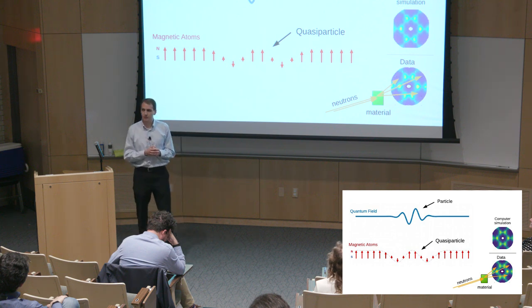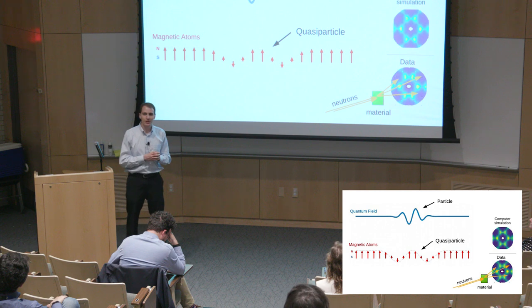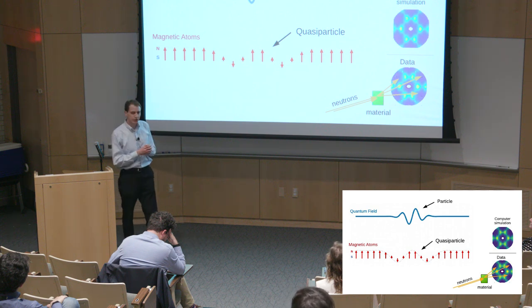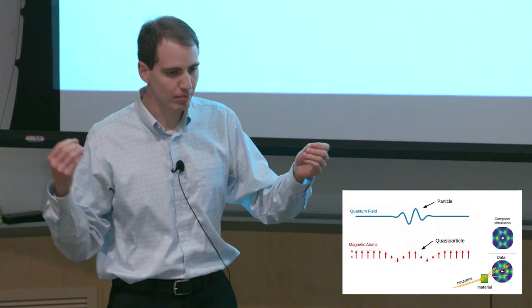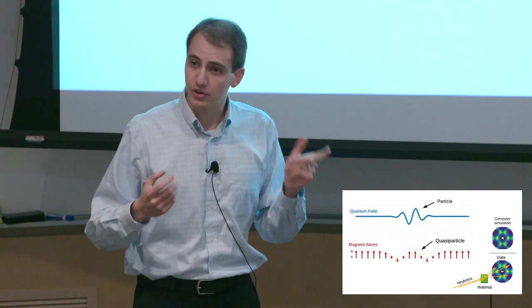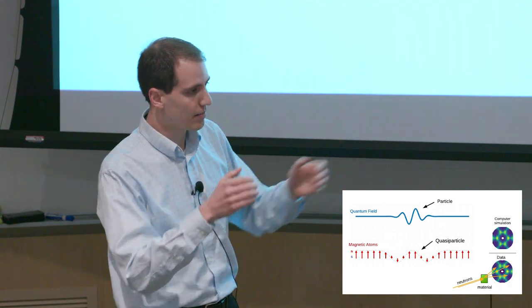In my thesis research, I've used a technique called neutron scattering to peer inside the box and look for new kinds of magnetic quasi-particles. Neutrons are particles which are chargeless, so they pass through material very easily, but they are magnetic, so they get deflected by magnetic fields.